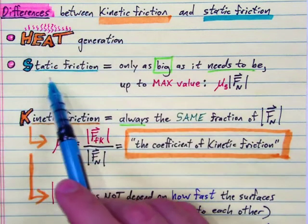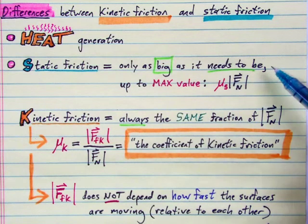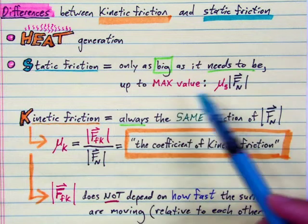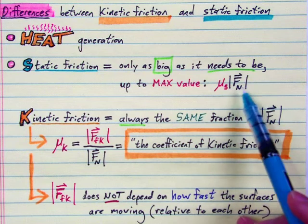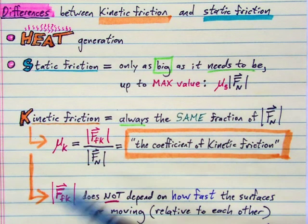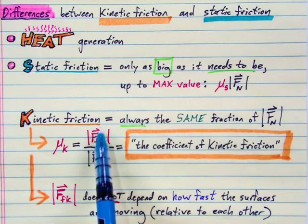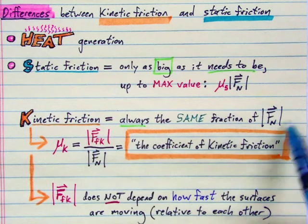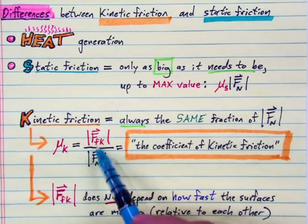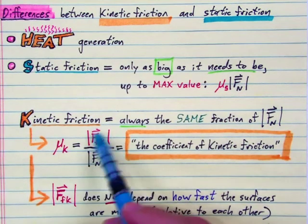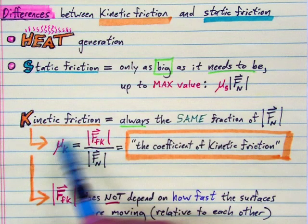Second, static friction is only ever as big as it needs to be to prevent slipping, up to some maximum value, up to some fraction, which we call the coefficient of static friction, of the magnitude of the normal force. On the other hand, if slipping, sliding, or skidding is already occurring, the magnitude of the force of kinetic friction is always the same fraction of the magnitude of the normal force. We call this the coefficient of kinetic friction, the ratio of the magnitude of kinetic friction to the magnitude of the normal force. And kinetic friction is always this value.